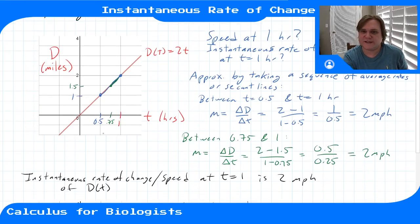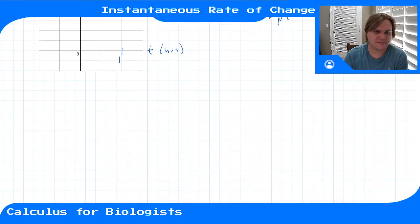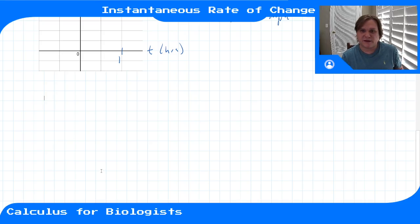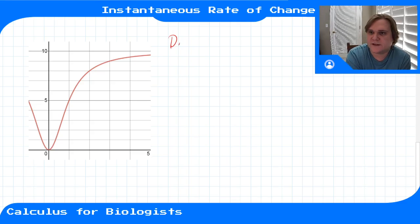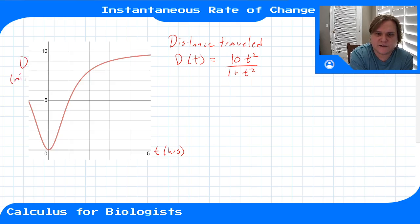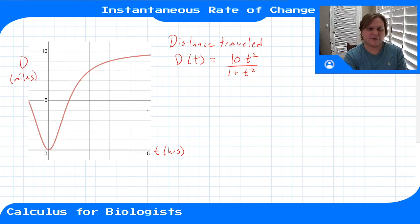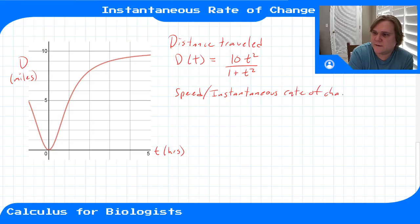You can think of the instantaneous rate of change of a distance function as describing the speedometer reading at that time. Now let's do a more complicated function. Let's say our distance isn't given by a nice straight line — we're moving at a non-constant speed. Our distance is described by d(t) = 10t² / (1 + t²), where time is in hours and distance is in miles. If we want to know the speed or instantaneous rate of change at time t = 2 hours...